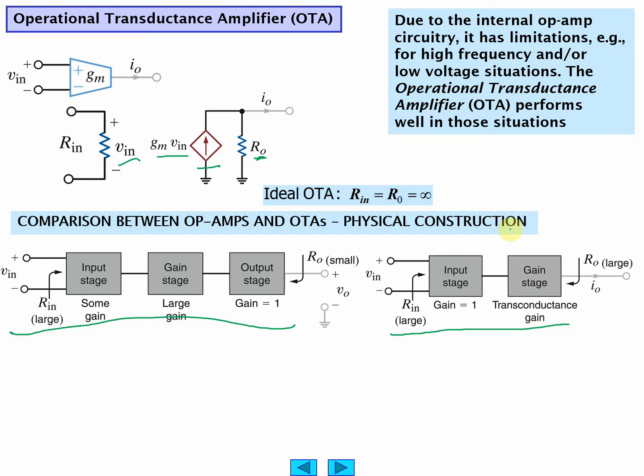Transconductance, so you have the GM, the transconductance times V in. Here you'll notice you don't have this. The deal is by eliminating this stage, you're making it much faster. So an operational transconductance amplifier does well at low voltages and high frequencies.